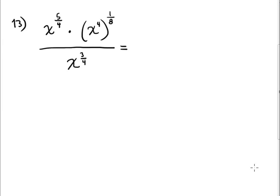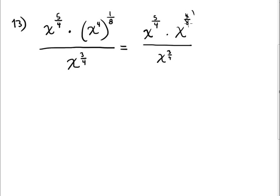Okay, this next simplification involves fractional exponents. According to the order of operations, the exponent inside the parentheses comes first. I copy the expression exactly: the multiplication gives 4 over 8 — for the x exponents that's 3 over 4 — and 4/8 simplifies to one half. So we have x to the 5/4 times x to the 1/2 in the numerator, over x to the 3/4.